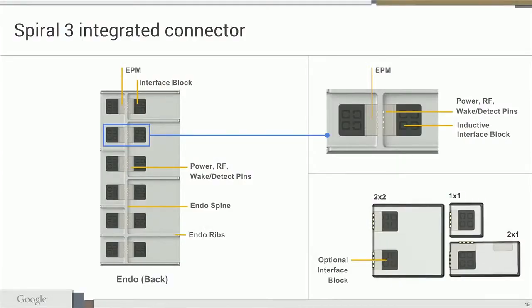Assuming all of this works, the Spiral 3 industrial design will probably look something like this. We're looking to solicit input from everyone here through the developer conference. Our vision is to have interface blocks with contactless connectors for data, and pins coming out of the spine for the power, ground, RF bus, and wake detect.